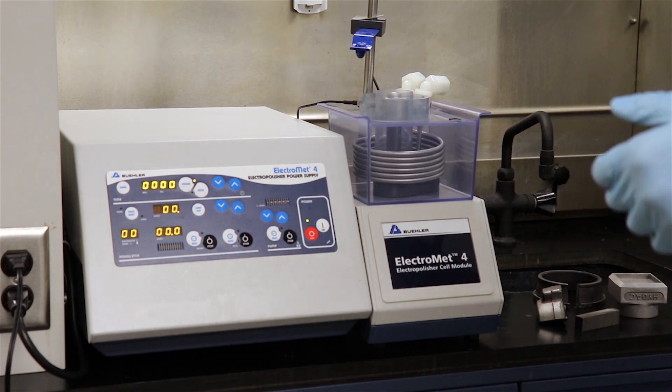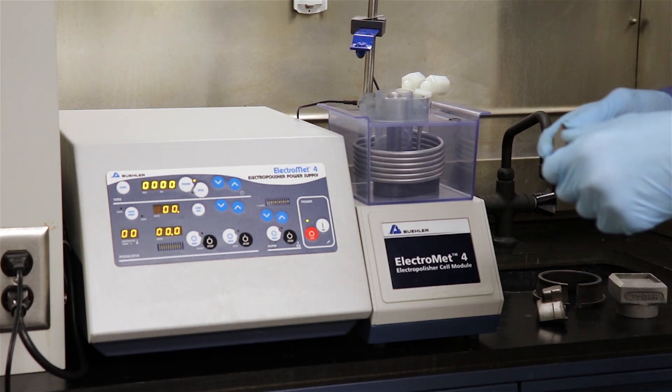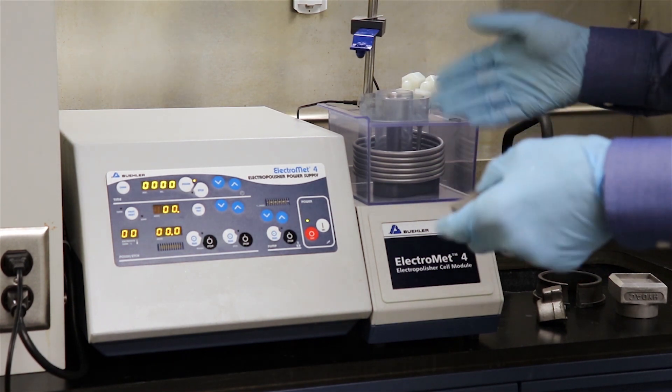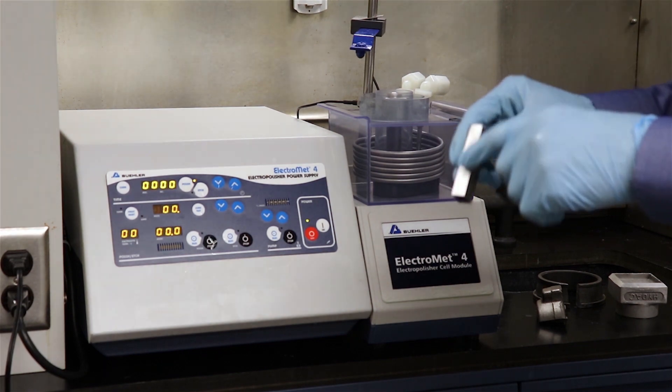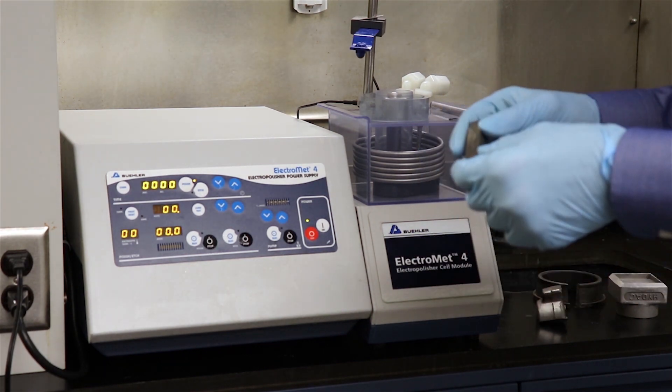Electropolishing involves preparation of a material sample by using a power supply and a chemical electrolyte to selectively remove material from the surface so that we can see the true structure underneath.